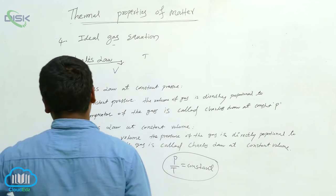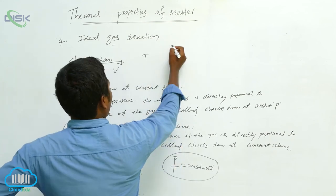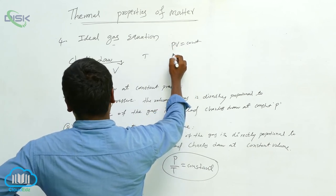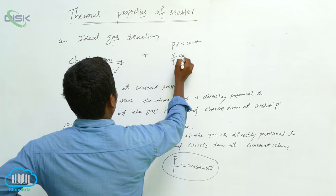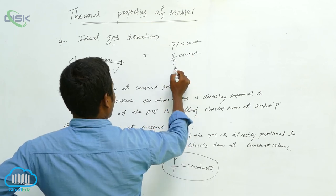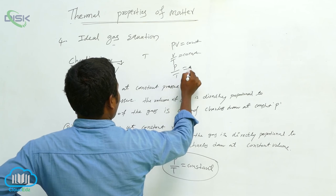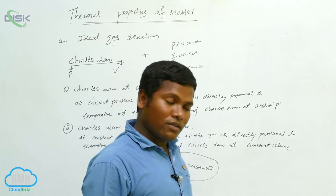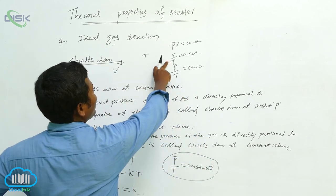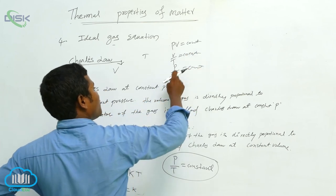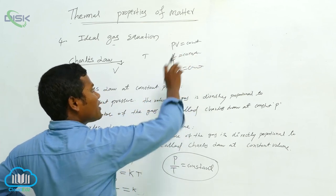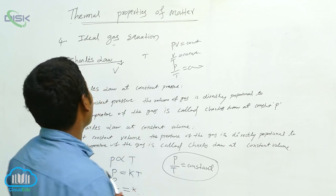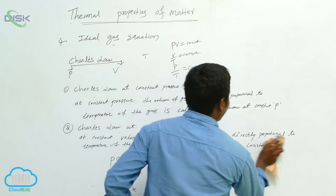Till now we derived three relations. First relation: Boyle's Law — PV is equal to constant. Next relation: V by T is equal to constant. Third one: P by T is equal to constant. So we got Boyle's Law first, then Charles' Law at constant P — where P is missing from the ratio — and Charles' Law at constant V — where V is missing. Next we are going to derive the ideal gas equations.